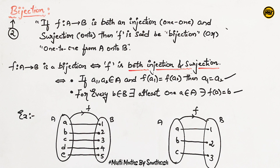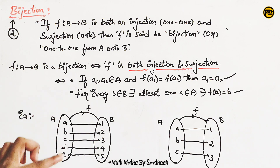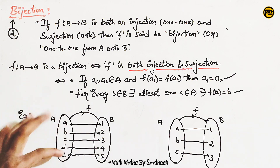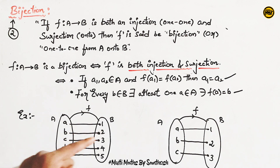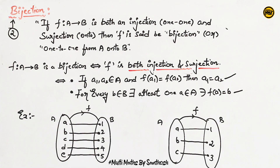This is a function. It is called a one-one function because it has different elements mapping to different images.